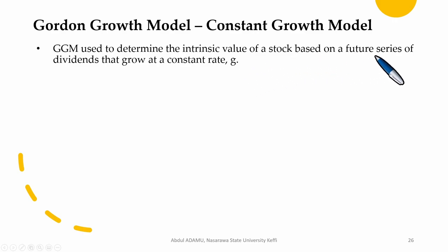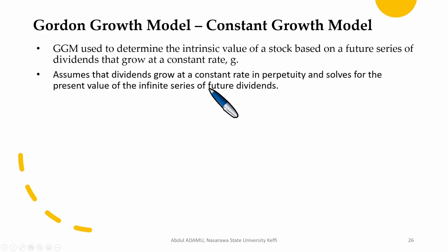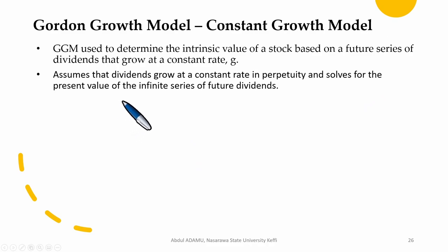The dividend grows at a constant rate. There is a growth rate which is constant and which is for an infinite period of time. It is assumed that dividends grow at a constant rate in perpetuity — that is, for an infinite period — and the model solves for the present value of the infinite series of future dividends.